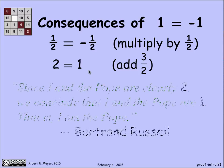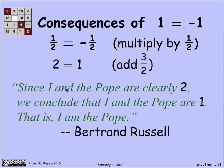Now I'm in great shape to prove all kinds of things. Here's a famous one. Since I and the pope are clearly 2, we conclude that I and the pope are 1. That is, I am the pope. And I've just proved to you this absurd fact.